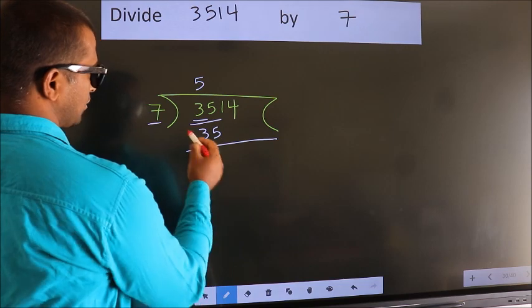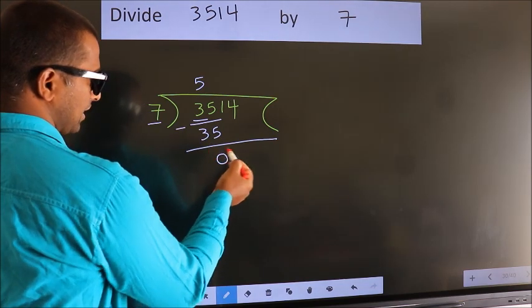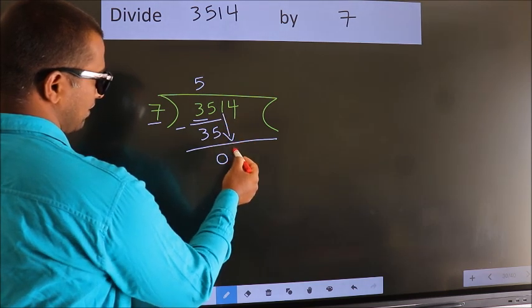Now we should subtract. We get 0. After this, bring down the beside number. So 1 down.